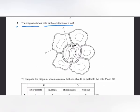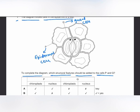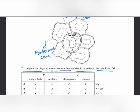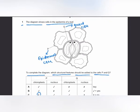We have two cells in the epidermis of the leaf. Cell P is the epidermal cell and cell Q is the guard cell. To complete the diagram, we need to add structural features to cells P and Q. Epidermal cells do not have chloroplasts, so we do not place chloroplasts in cell P.